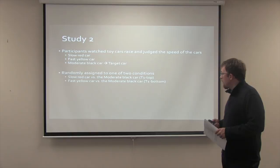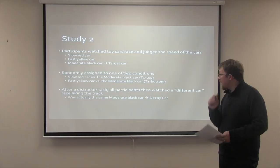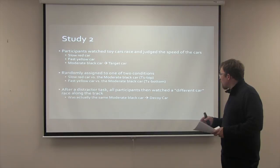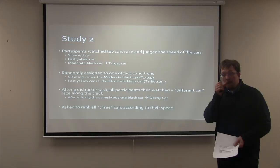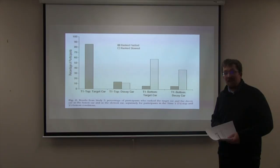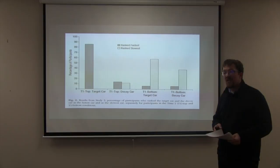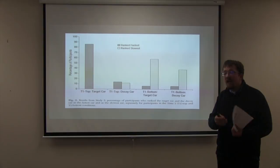After watching the two cars race, participants completed a distractor task and were then asked to watch a final car race — which was actually the same moderate black car as before, now called the decoy car. Despite being told it was a different car, it was the exact same moderate speed car. Participants were then asked to rank the three cars according to their speed. When the moderate speed car was paired with the slower car in the T1 top condition, participants rated it as being the fastest. However, when it was paired with the faster car in the T1 bottom condition, it was rated as being the slowest. These results demonstrate that our evaluation of a stimulus depends on our earlier relative evaluations.